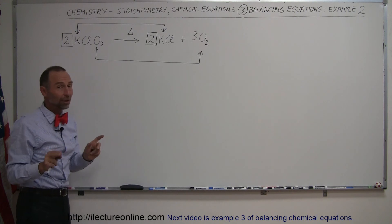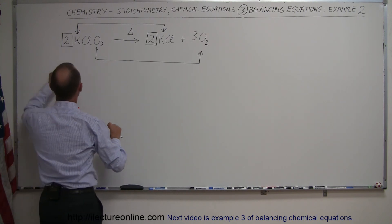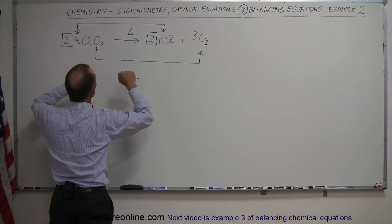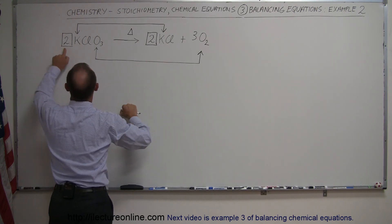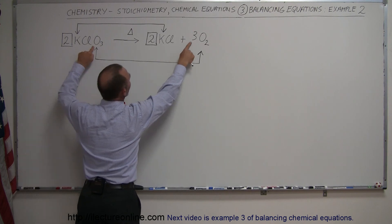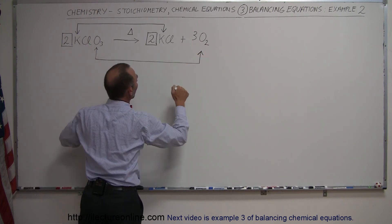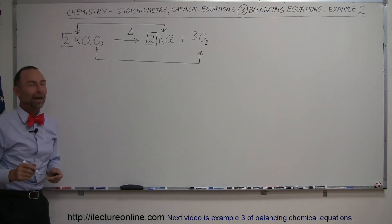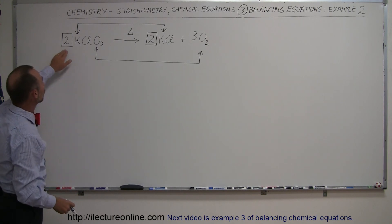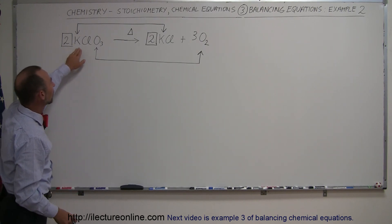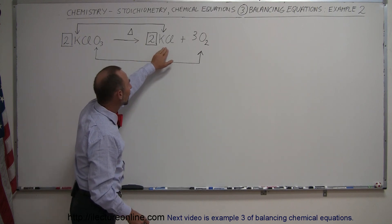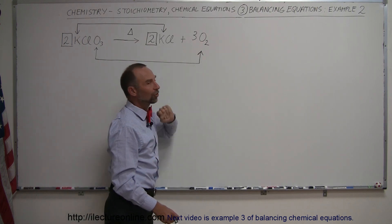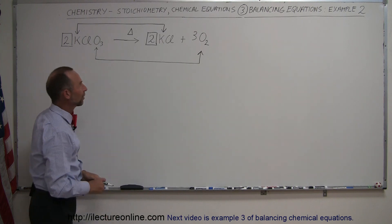And now just to check, make sure I didn't mess up anything. I have two potassiums and two potassiums, so those are balanced. I have two chlorines and two chlorines, those are balanced. I have six oxygens here and six oxygens there, those are balanced. So I now have a balanced equation. That means I need two moles of potassium chlorate when heated will yield two moles of potassium chloride and three moles of oxygen gas. That's our balanced equation.